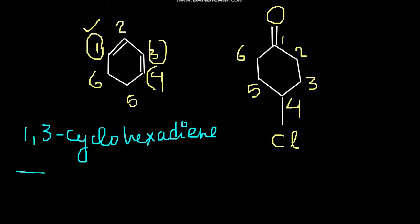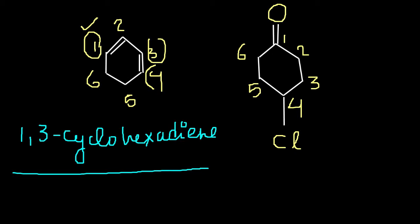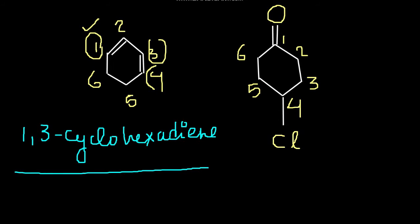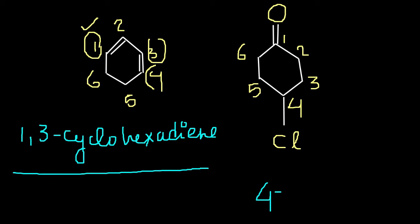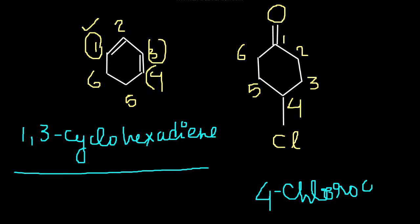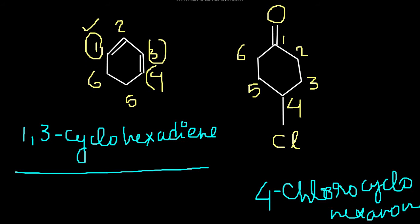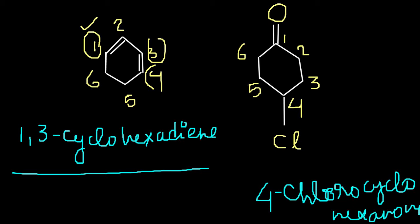For the second cyclic compound, we have a cyclohexane containing two functional groups: a double-bonded oxygen (ketone) and a chlorine substitution. The ketone at position 1 gets first priority. Chlorine is at position 4. So the name will be 4-chlorocyclohexan-1-one.